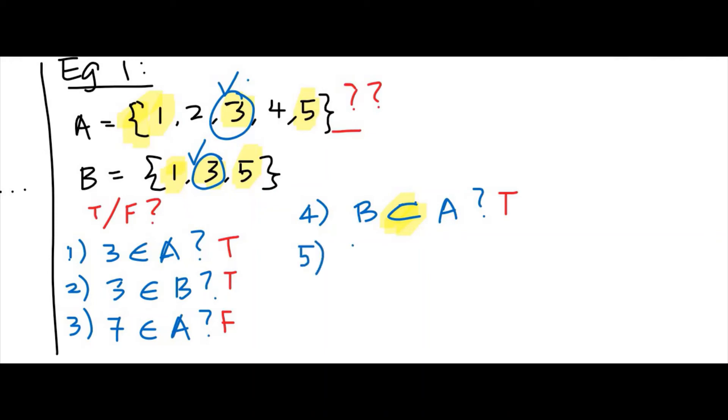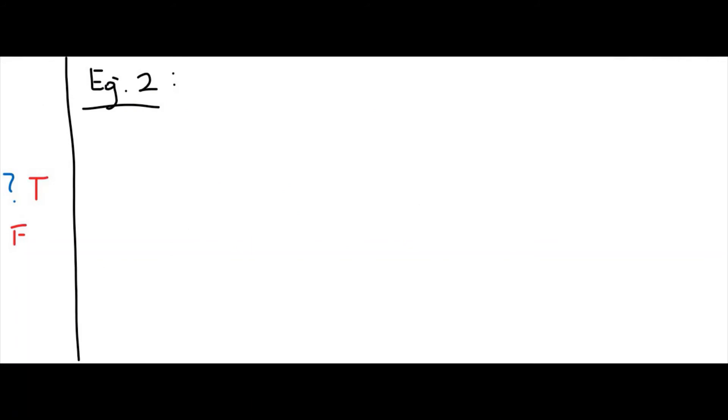One more last question, question five: is A a subset of B? The other way around it can't be, because B is a subset of A, so A cannot be the subset of B.